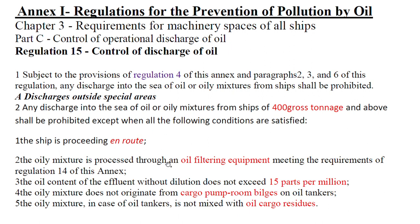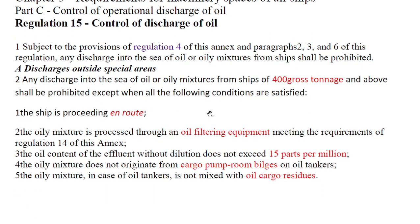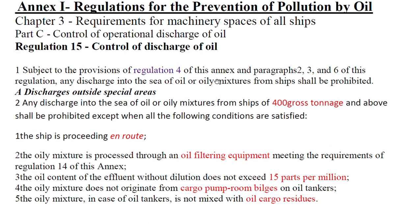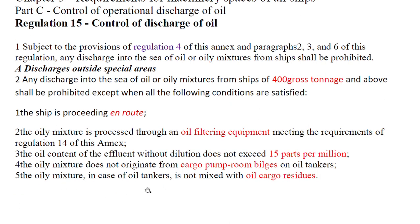For 400 gross tonnage and above, outside the special area, the ship must be en route; it must pass the oily mixture through an oil filtering equipment; the effluent must not exceed 15 parts per million upon dilution; it must not be from cargo pump room bilges — as the regulation is a requirement for machinery space of all ships; and in the case of an oil tanker, the oily mixture must not be mixed with oil cargo residues.